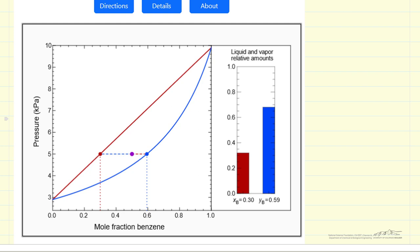What the lever rule says is that the amount of liquid is proportional to this distance here, and the amount of vapor is proportional to this distance here. The amounts are shown on the right side bar graph as well as the mole fractions of the liquid and mole fraction of the vapor.